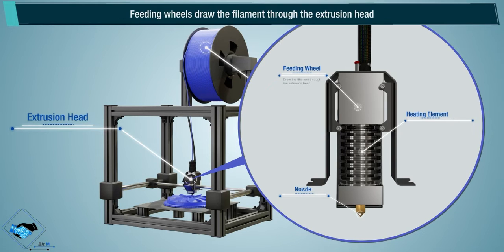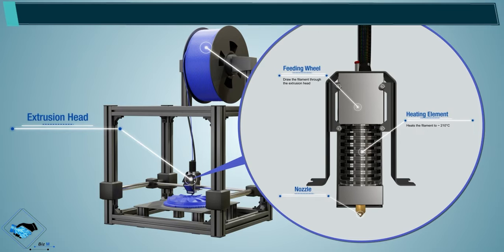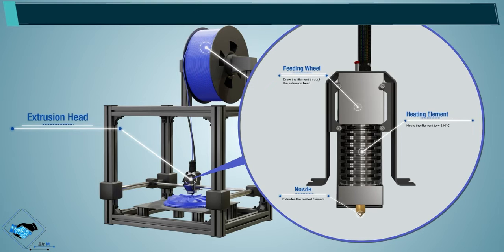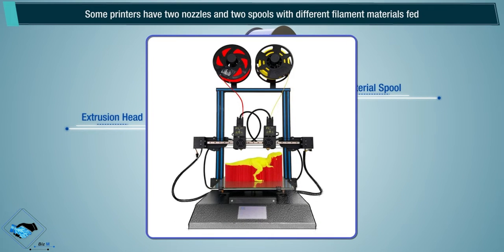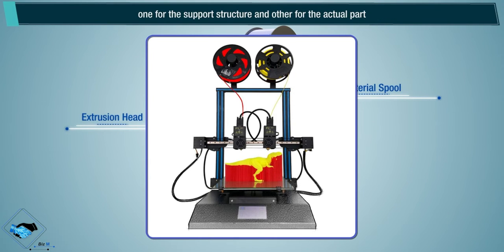Feeding wheels draw the filament through the extrusion head, and the heating element heats the filament to approximately 210 degrees centigrade. The melted filament then extrudes out through the nozzle. Some printers have two nozzles and two spools with different filament materials — one for the support structure and one for the actual part.